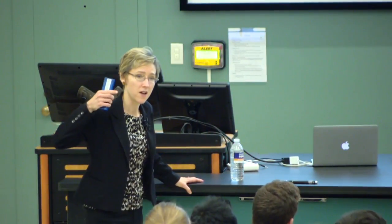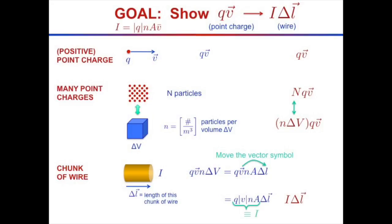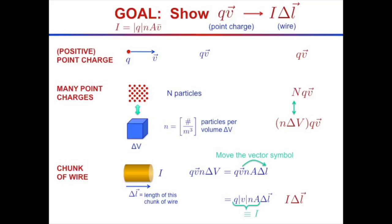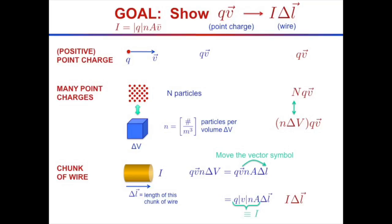The next step is to move the vector symbol from v to delta-L. The direction of the wire determines the direction of current flow — changing the wire's direction automatically changes the direction of the particles flowing through it. So I can put the vector symbol on delta-L instead of v.